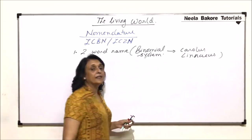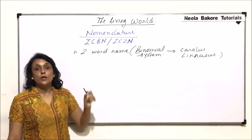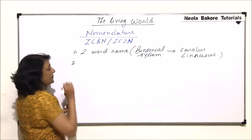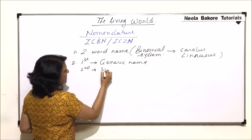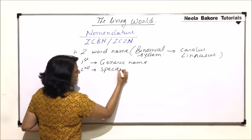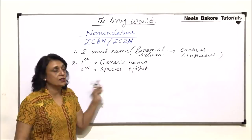The binomial system of nomenclature was given by Carolus Linnaeus. He was the scientist who gave this concept of two words. So there are two words in the scientific name of any species: the first word is the generic name, and the second word is the species or specific epithet — basically the name of the species.